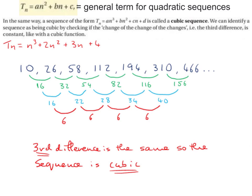In the same way, a sequence in the form of Tn equals An cubed plus Bn squared plus Cn plus D is called a cubic sequence. We can identify a sequence as being cubic by checking the change of the change of the change, i.e. the third difference is constant, like with the cubic function.